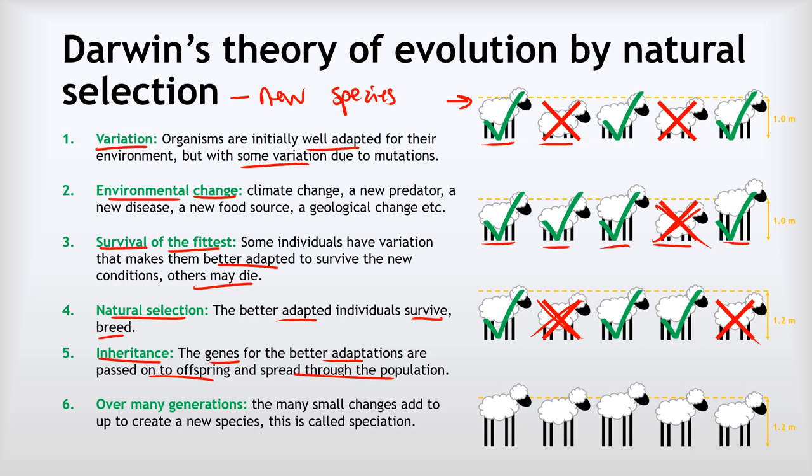The last key thing with evolution is that it happens over many generations. Evolution doesn't happen in the lifespan of a single sheep. You can't really notice it over a few generations. It takes many, many generations with many small changes adding up over tens, hundreds, thousands, millions of years to eventually lead to an entirely new species. We call that process of new species developing speciation.